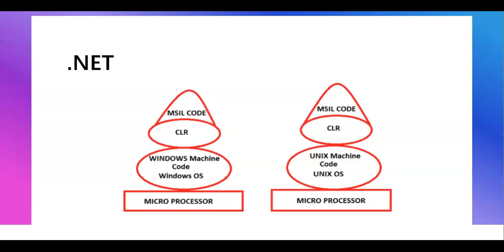Similarly, .NET works the same way. In Java we have JVM; in .NET we have CLR. CLR is platform-specific — for Windows there is one CLR, and for Unix there is another CLR available. In .NET, our code is compiled to a platform-neutral language called MSIL — Microsoft Intermediate Language. This intermediate language is then processed by the CLR, which converts the entire code into machine-readable format — zeros and ones. It then passes the output to the operating system. The same process happens on Unix OS as well.